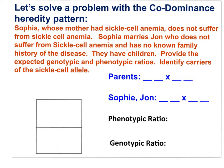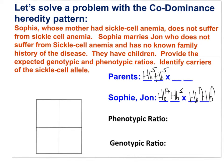Let's try to solve a problem with the codominance heredity pattern. Sophia's mother had sickle cell. Sophia does not suffer from sickle cell, so she must have the A allele for normal hemoglobin. But because her mother did suffer sickle cell, Sophia is actually heterozygous. John has no known family history and does not suffer the disease, so John must be homozygous for normal hemoglobin.